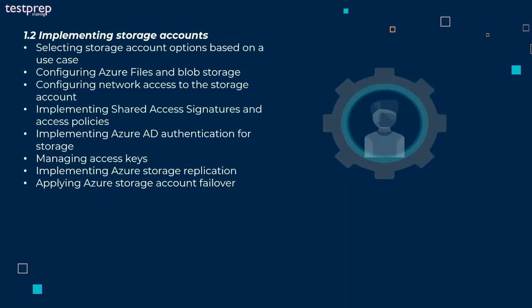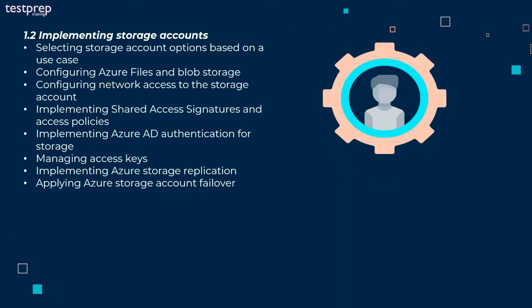Second, implementing storage accounts, divided into eight sub-parts: selecting storage account options based on a use case, configuring Azure files and blob storage, configuring network access to the storage account, implementing shared access signatures and access policies, implementing Azure AD authentication for storage, managing access keys, implementing Azure storage replication, and applying Azure storage account failover.